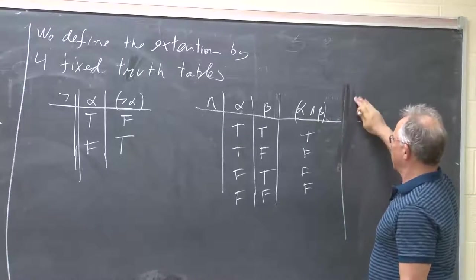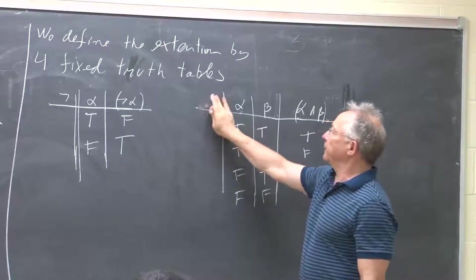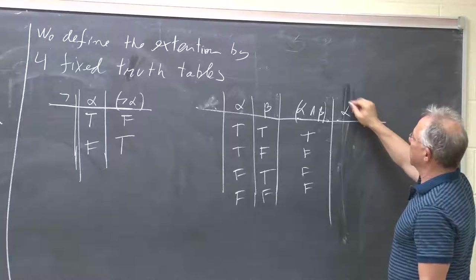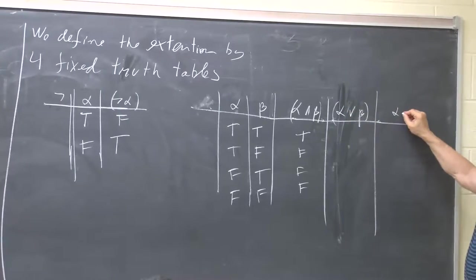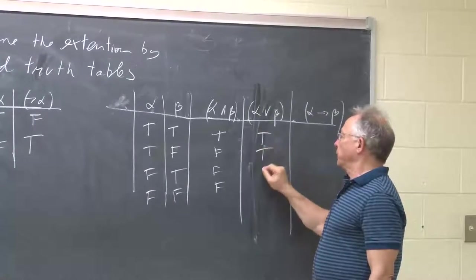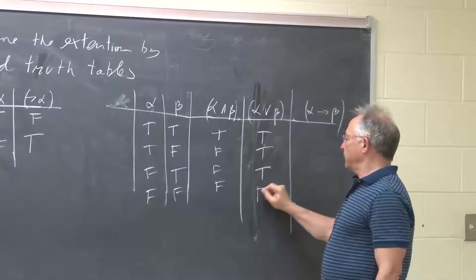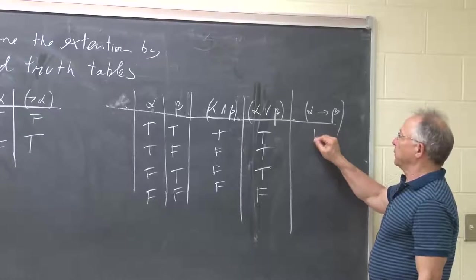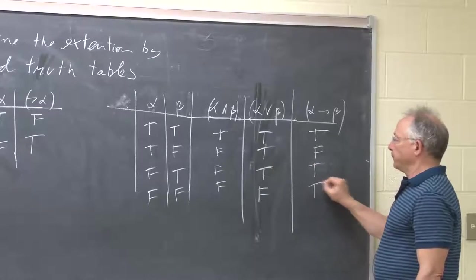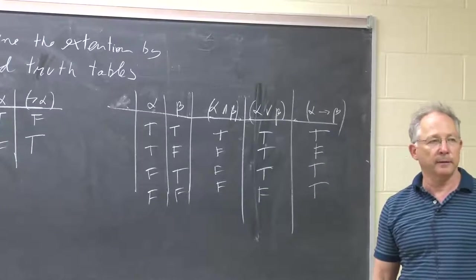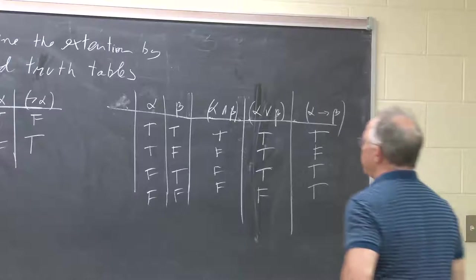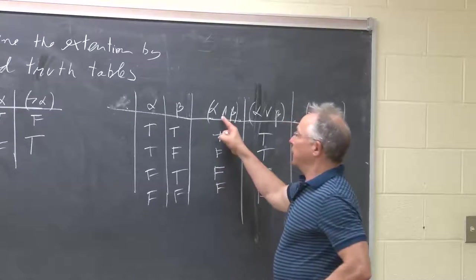Similarly, the truth table for alpha v beta (OR): true, true, true, false. And the truth table for alpha arrow beta (implication): true, false, true, true. This is somewhat arbitrary — it is the way we are going to interpret our connectives. The wedge is interpreted as AND, the v is interpreted as OR (inclusive OR — a or b or both), and the arrow represents implication.